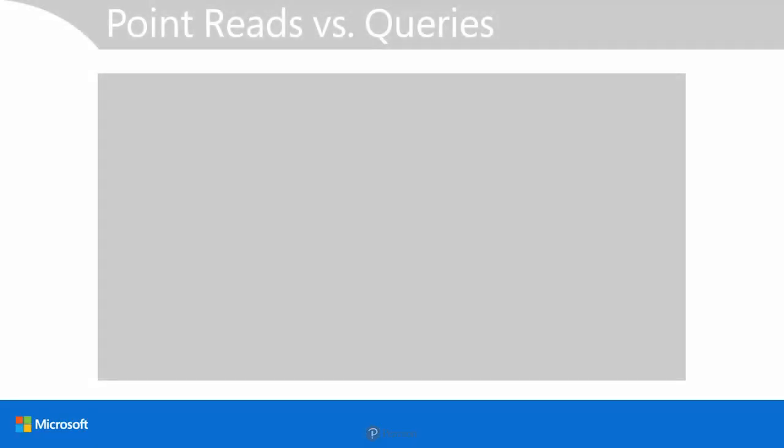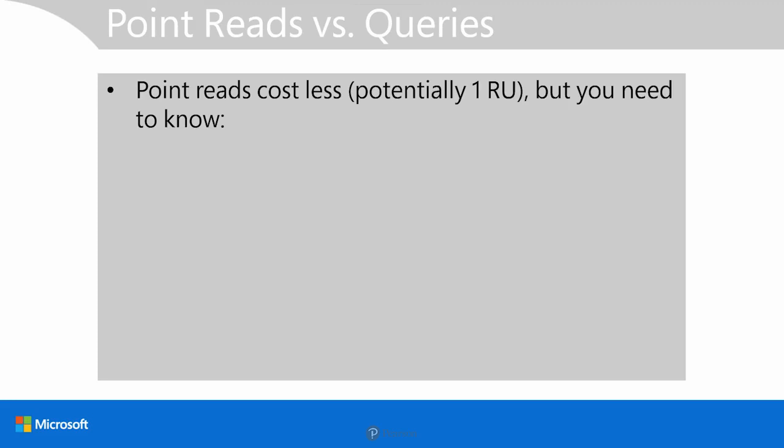First of all, we remember that the least expensive way to query Cosmos DB in terms of request unit cost are point reads. Now while these cost less, you need to know that in order to do a point read, you have to specify the item ID and the partition key in your query. So you'll need to take that into account directly.